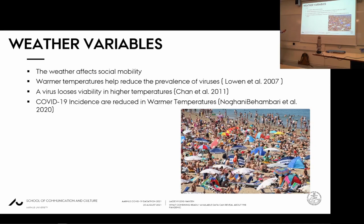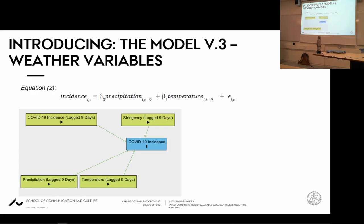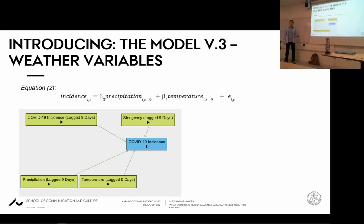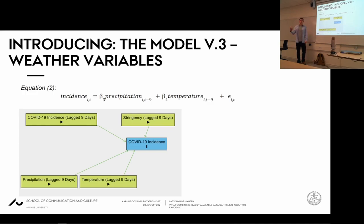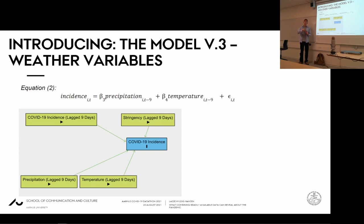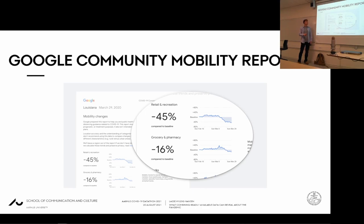The next variables we added were weather variables: temperature and precipitation. Temperature has a double effect — people move differently because of warmer temperatures, and warmer temperatures apparently affect the virus so it's less contagious. We don't know why, but it's this double effect of how people move and how the virus behaves. The same can be said about precipitation — people move differently when it rains, going inside or to each other's houses.